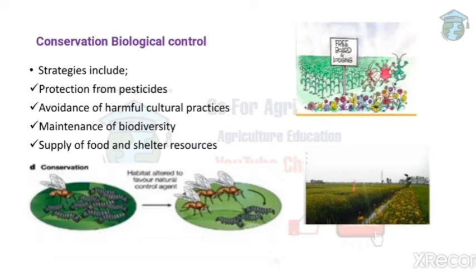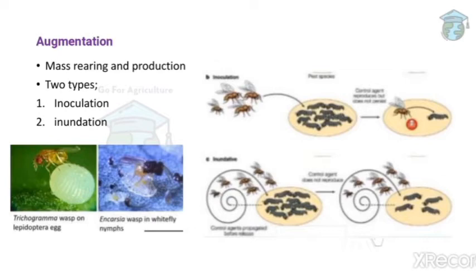Further conservation strategies include maintenance of biodiversity — we should ensure natural enemy populations are large — and supply of food and shelter resources. If we give natural enemies food and a place to grow, their population will increase, and we can save our crops from pests. This is conservation biological control.